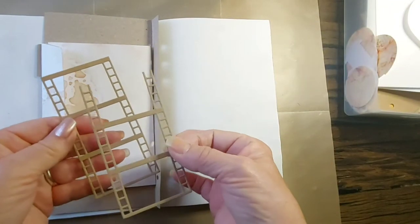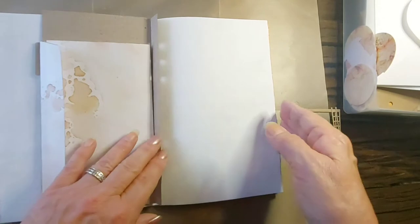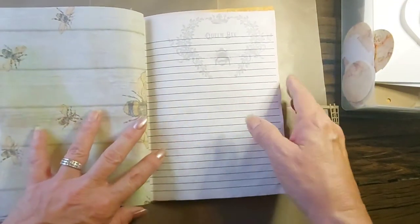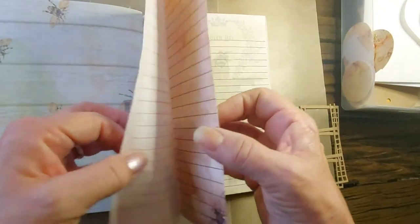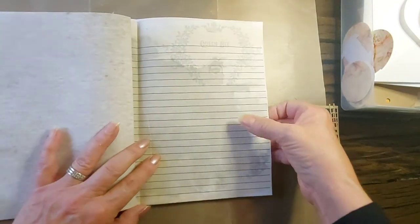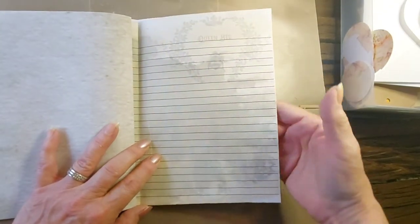Again, there's some ephemera, photograph frames. Again, more pages. And this is just the other half of the book. Now some of these pages have like a mica powder on.